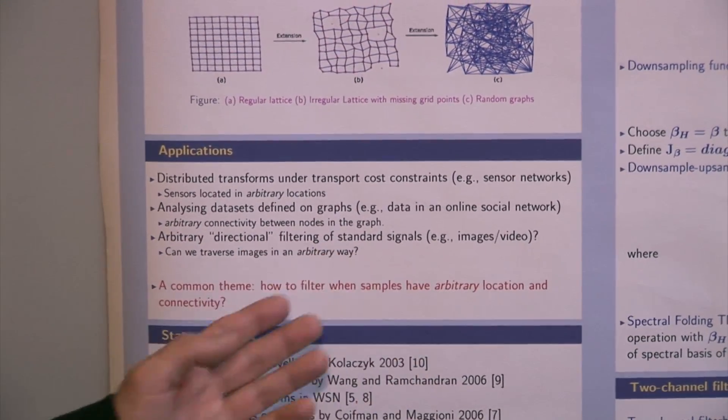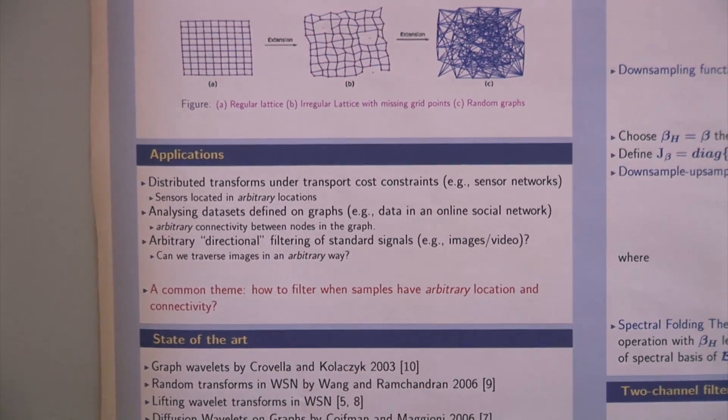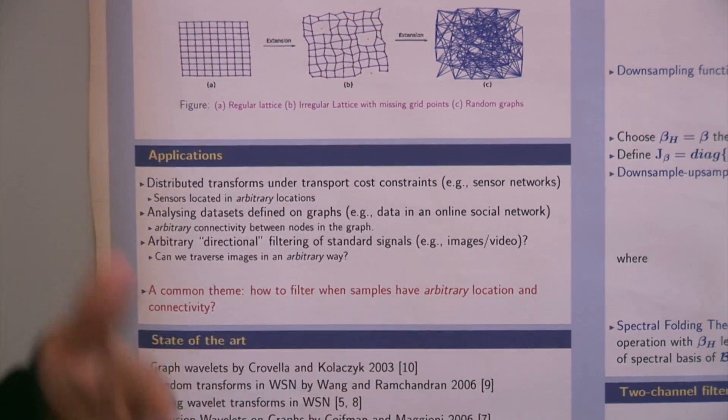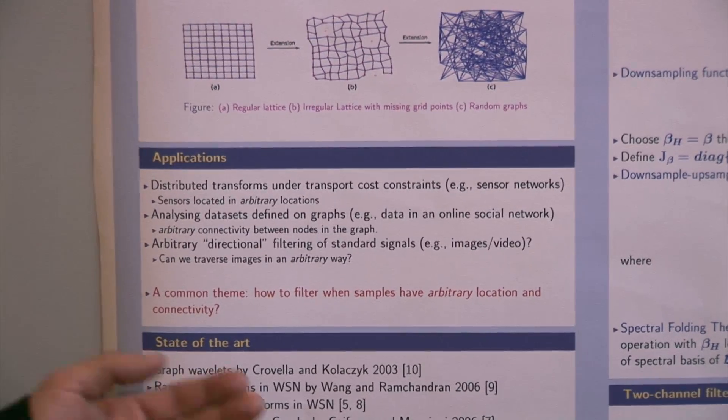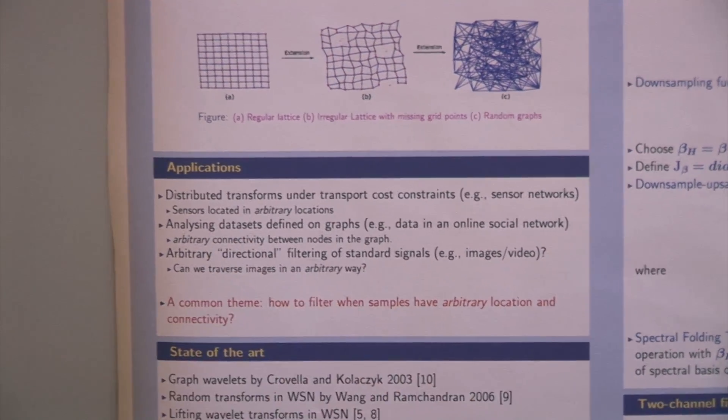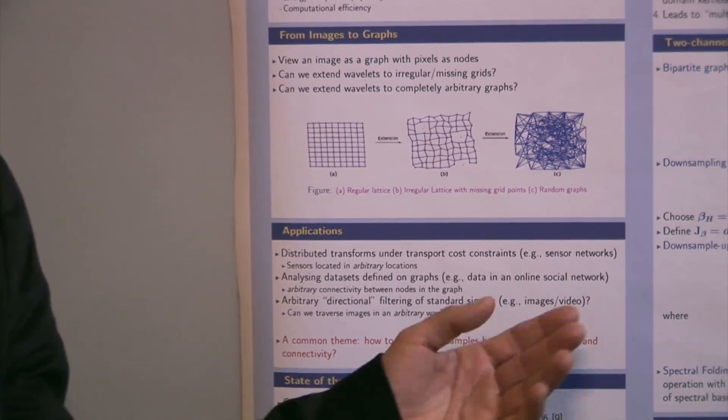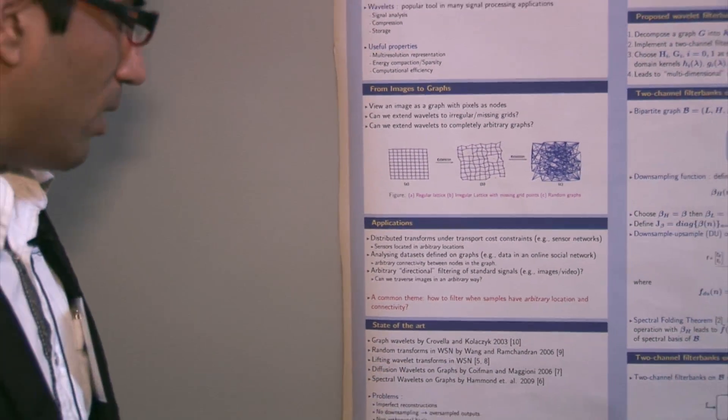And also, we would like to filter standard signals in arbitrary directions, not just horizontal and vertical, but in other directions. So a common theme in all these applications is how to filter and downsample when the samples have arbitrary location and connectivity.